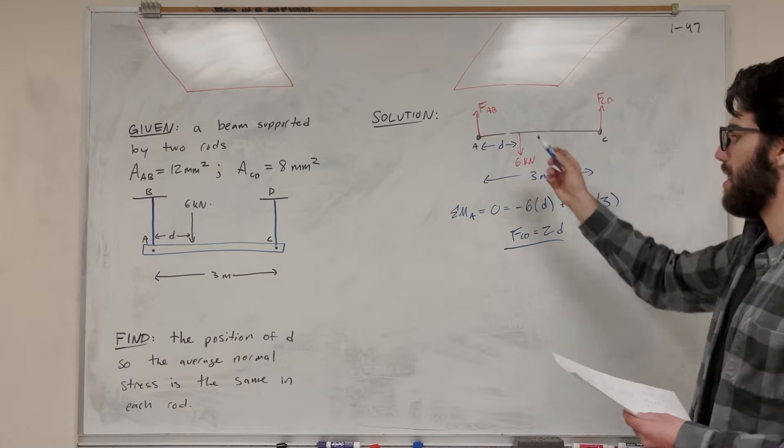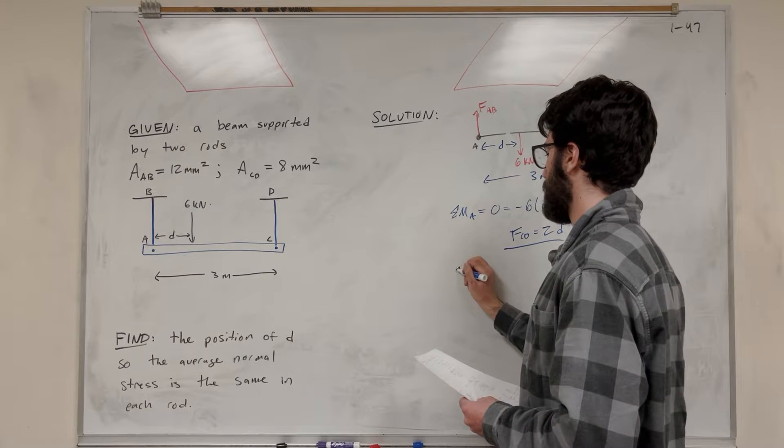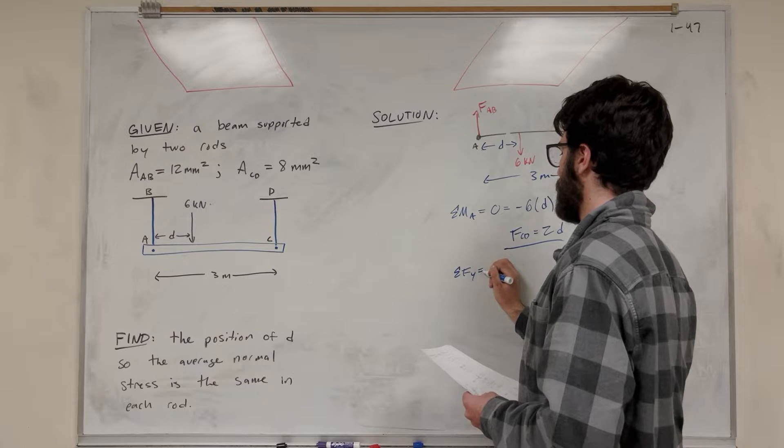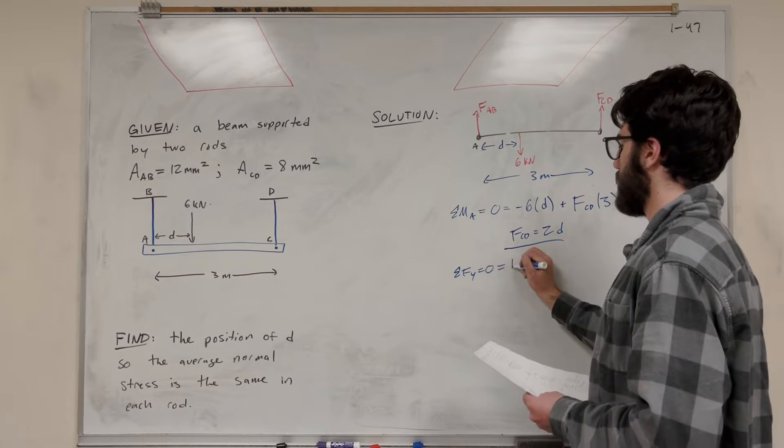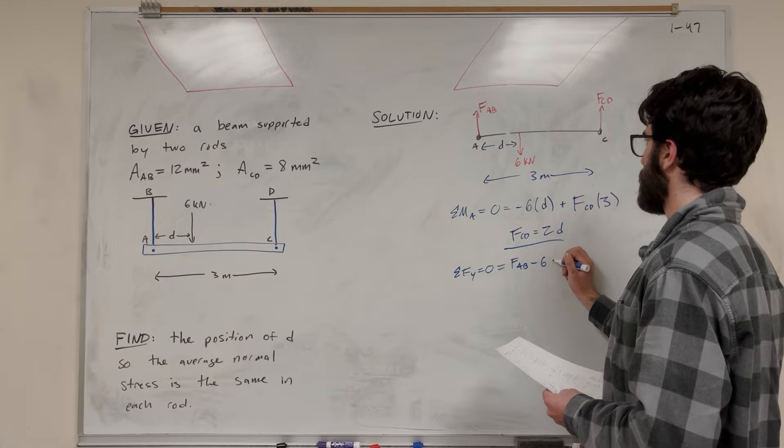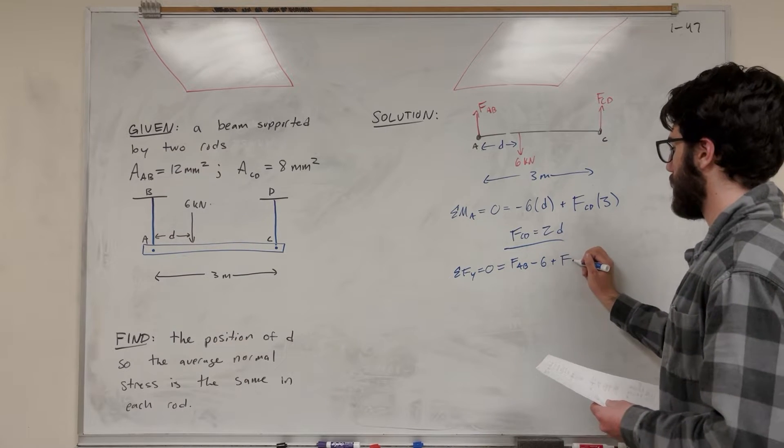Now let's find it for force AB. So now we can do sum of the forces in the Y. It's equal to zero. So it's going to be force AB minus 6 plus force CD.